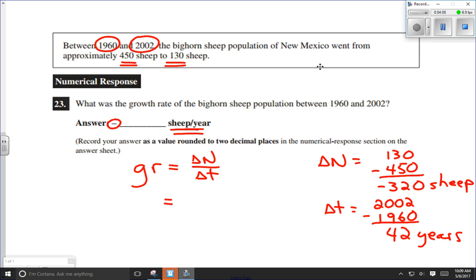So we plug in our numbers. Negative 320 sheep over 42 years, and we calculate that. Negative 320 divided by 42, I get an answer of negative 7.6190478, and this is going to be sheep per year.